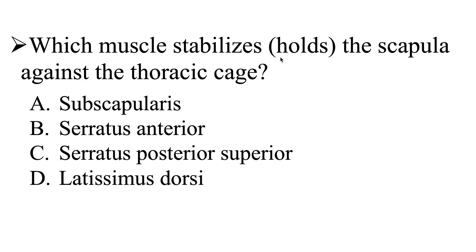One more time — which muscle stabilizes the scapula against the thoracic cage? Is it going to be the subscapularis, the serratus anterior, serratus posterior superior, or the latissimus dorsi? I'll give you a few moments to work on this question, and then we'll go ahead and head over to the explanation.